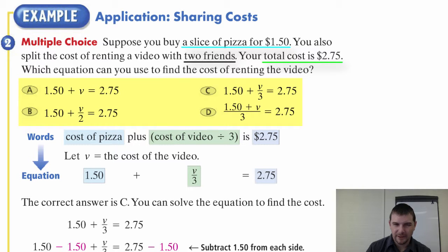Again, we have four choices. We have 1.50 plus v equals 2.75. 1.50 plus v divided by 2 equals 2.75. 1.50 plus v divided by 3 equals 2.75. And finally, 1.50 plus v, that sum divided by 3 equals 2.75.